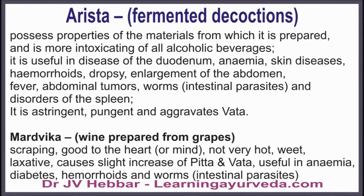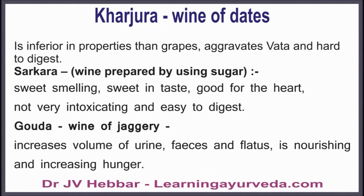Maradwika or wine prepared from grapes is good for the heart, promotes natural movement of body fluids, is laxative, causes slight increase of pitta and vata, cures anemia, and is helpful in diabetes, hemorrhoids, and worm infestation. Kharjura or wine prepared from dates is inferior in properties to grape wine, aggravates vata, and is hard to digest.